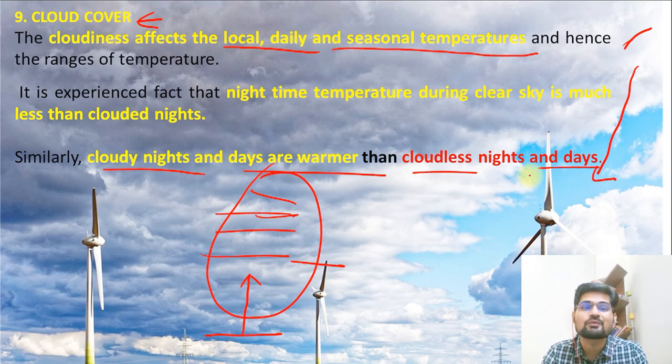So now we have discussed the horizontal distribution of temperature on earth's surface and the various factors associated with it. In upcoming sessions, we will talk about vertical distribution of temperature, lapse rate, adiabatic lapse rate, and many other topics. Stay tuned, stay safe, and keep watching.